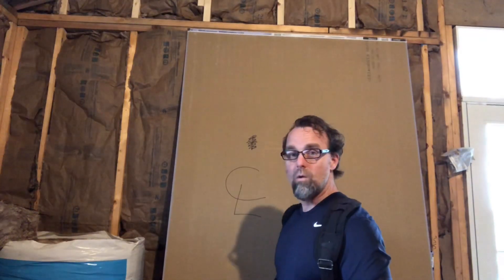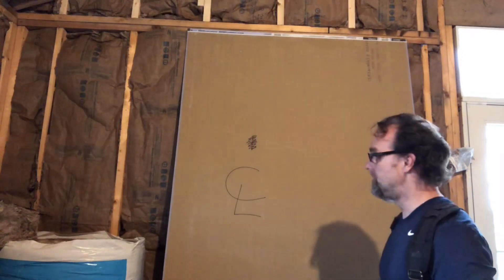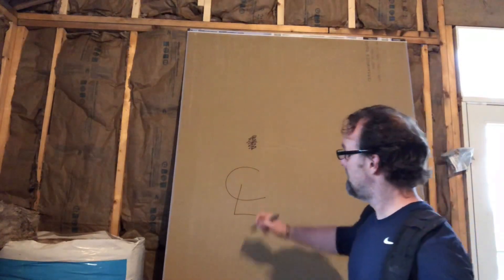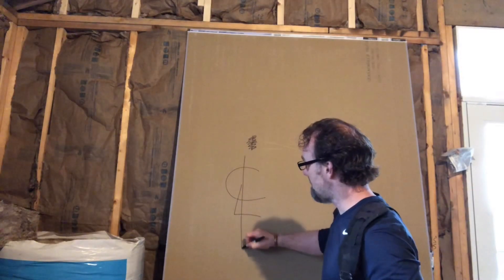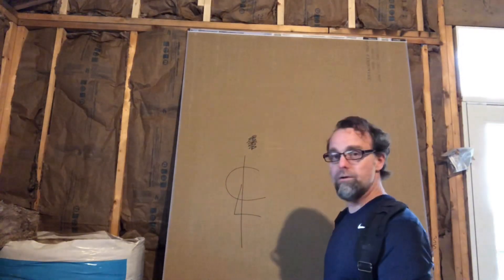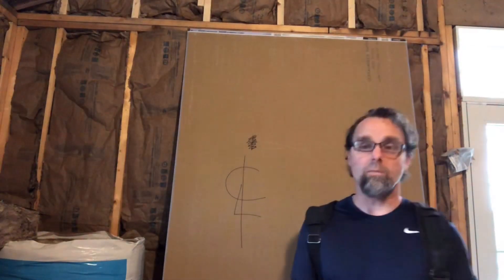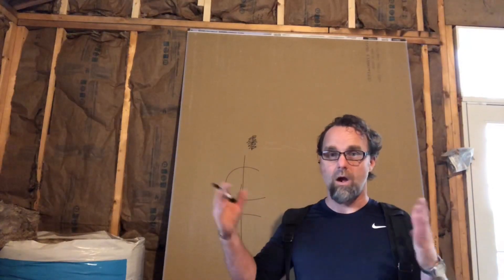We signify the center line with the marking 'CL,' which is written directly over top of the center line that you put through. The placement of the center line is determined from the blueprints, and you can see the center line is still visible from when we laid this doorway out on the top plate.